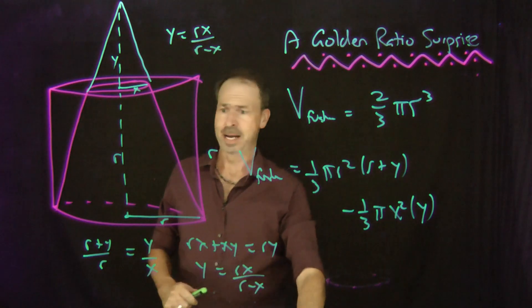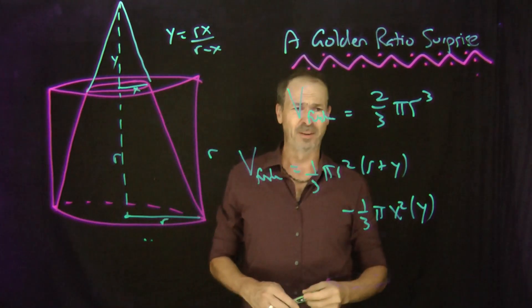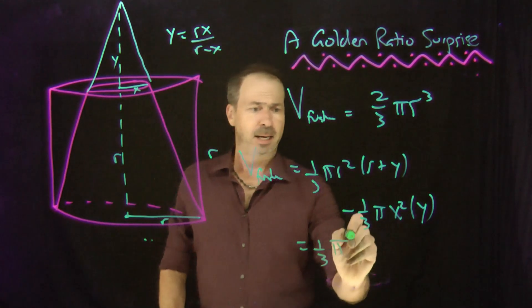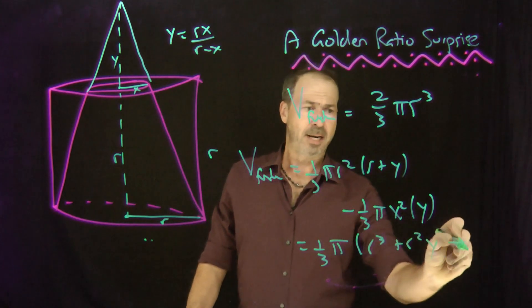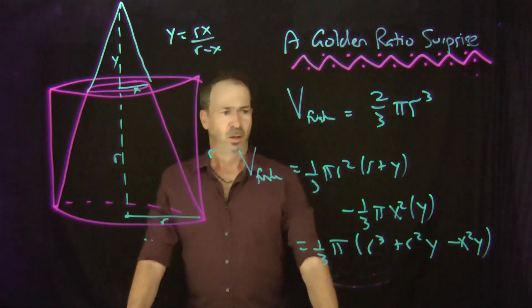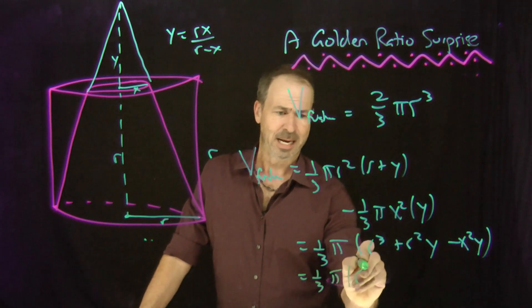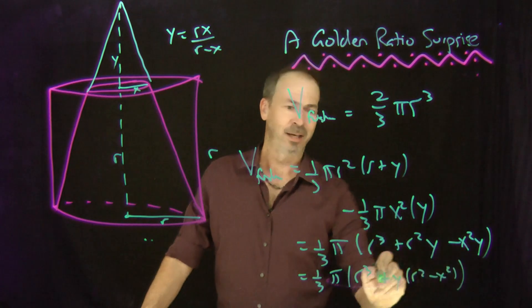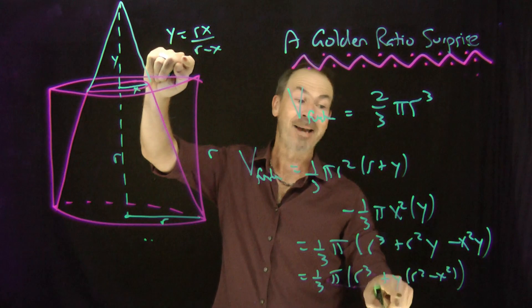Great! Is that helpful? I don't know. Let's find out. But there's something, there's something. I have to put it in. Ooh, I have to put it in. What have we got here? I've got one-third pi r cubed plus r squared y minus x squared y. Ooh, ooh, okay. This is one-third pi r cubed plus y times r squared minus x squared. Okay, at least we want a y now. y is rx over r minus x. Oh, this factors.